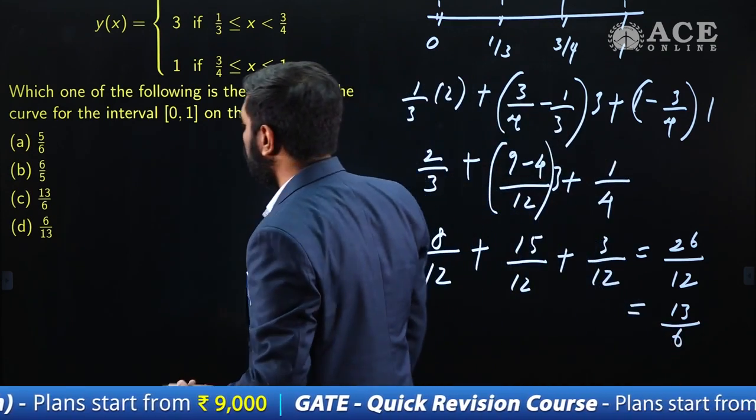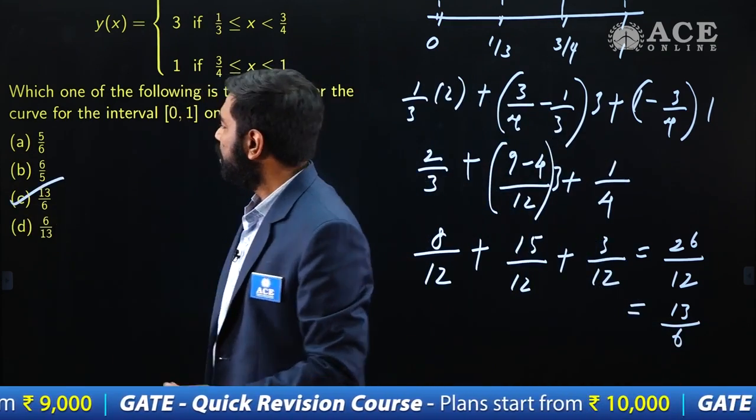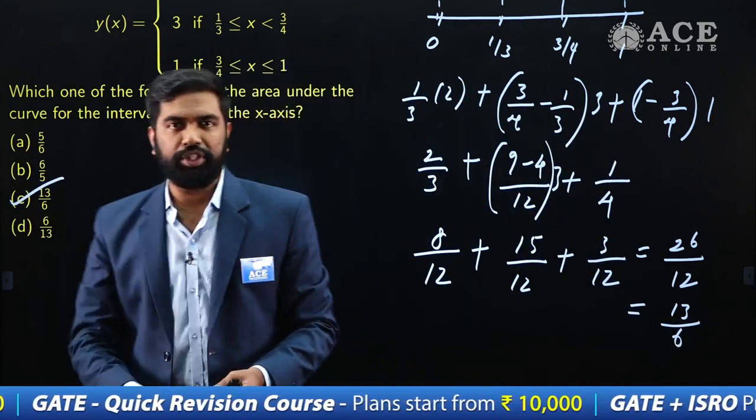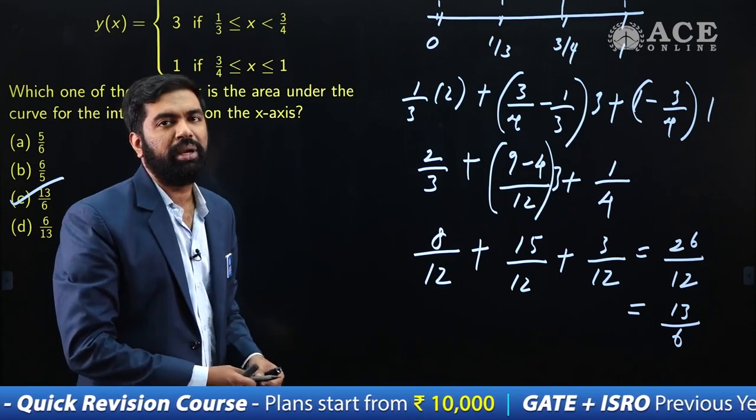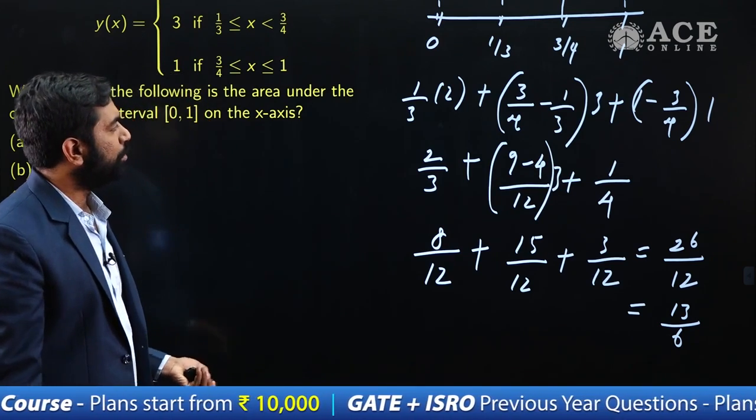Now you can add it. So this is 8 + 15 + 3 = 26. That gives 26/12. After simplification, you get 13/6. Do we have option 13/6? Yes. So the answer for this question is 13/6. Let's go to the next problem.